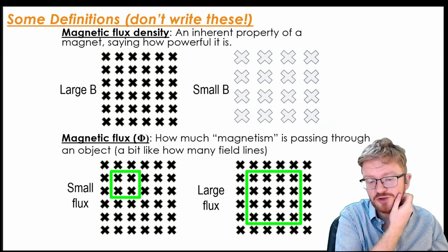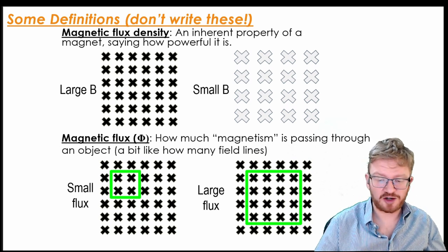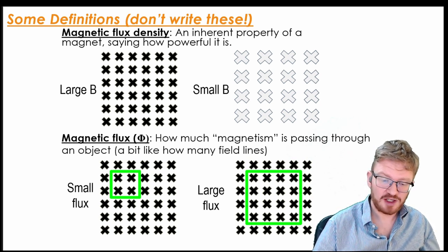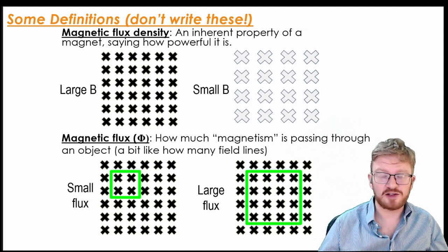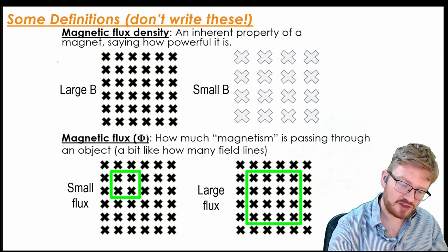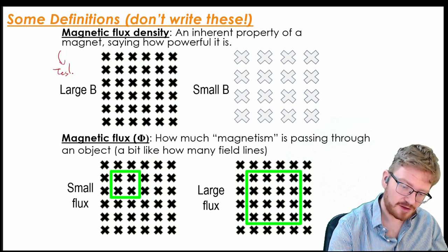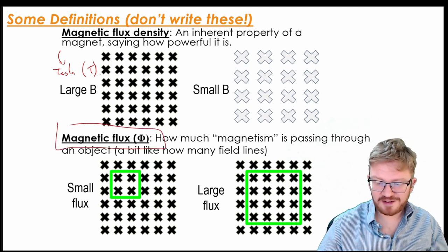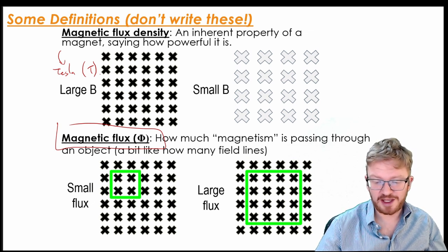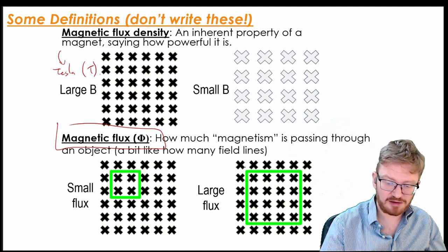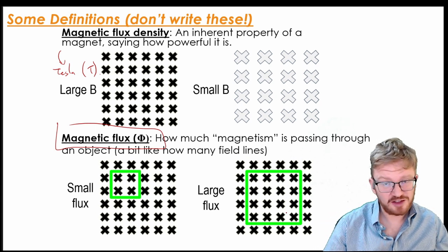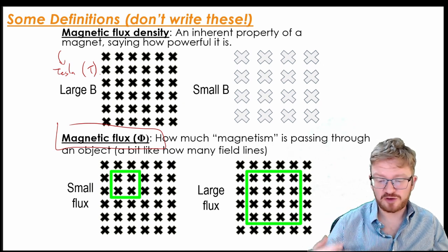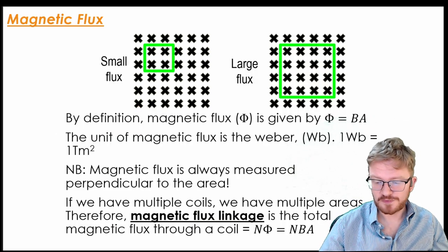A couple of quick definitions for you just to make sure you're clear with this. The first one is the idea of magnetic flux density. So magnetic flux density, that is a property of a magnet. It tells us how powerful it is. So you can think of it as the number of field lines per square metre. So this is measured in Tesla, which has a symbol capital T. Magnetic flux, that is how much magnetism is passing through an object, through an area. So here I've got two magnets with identical flux densities. But because one has a larger area, the one with a larger area has a larger flux because it's got more field lines passing through it.